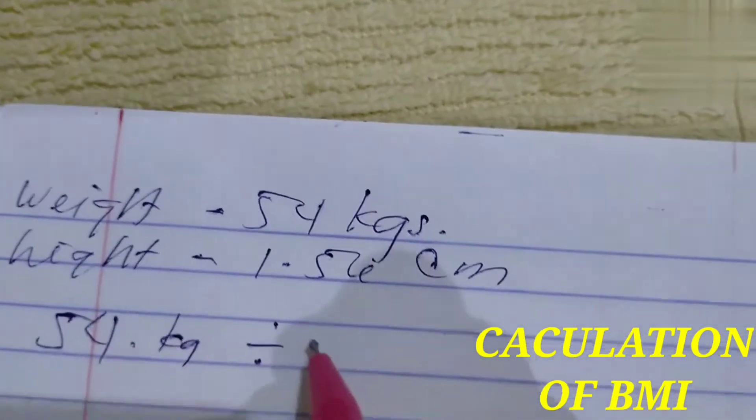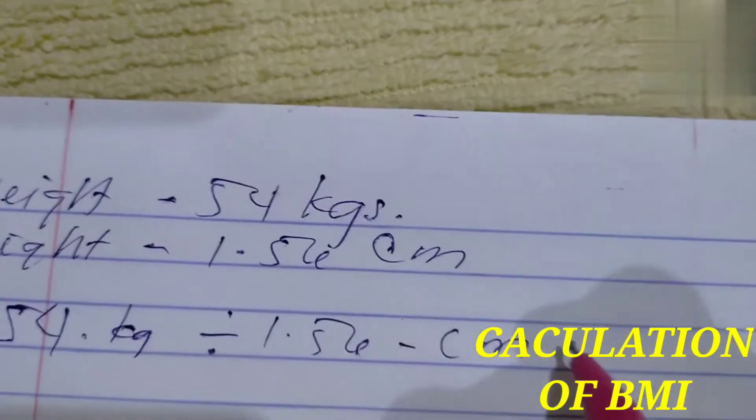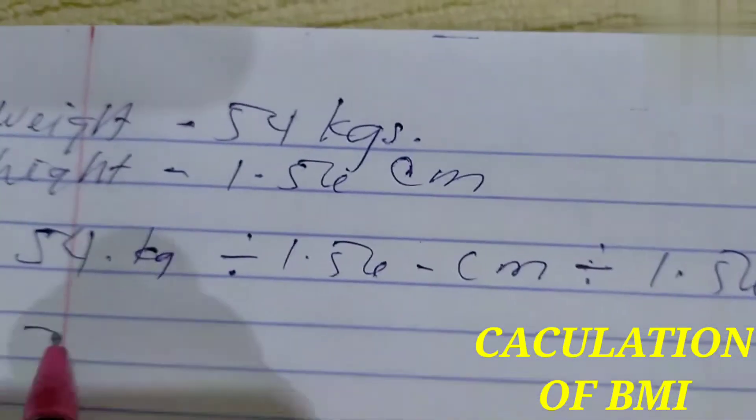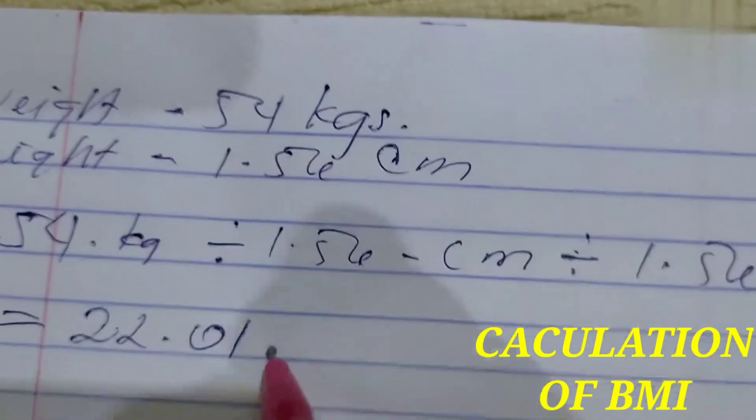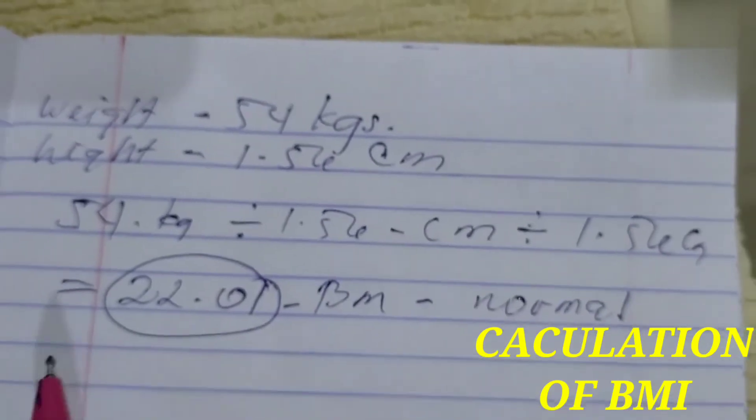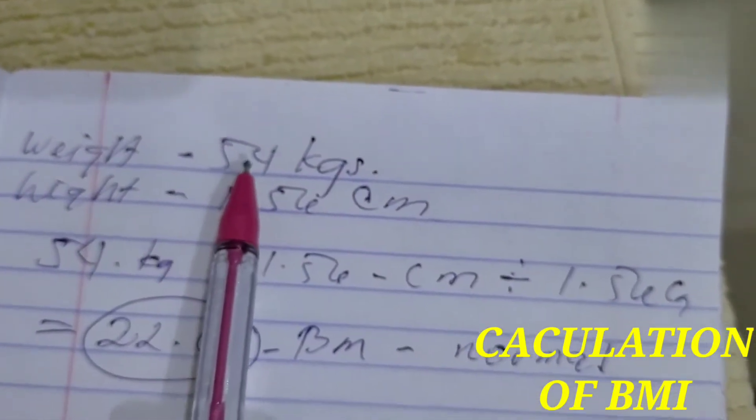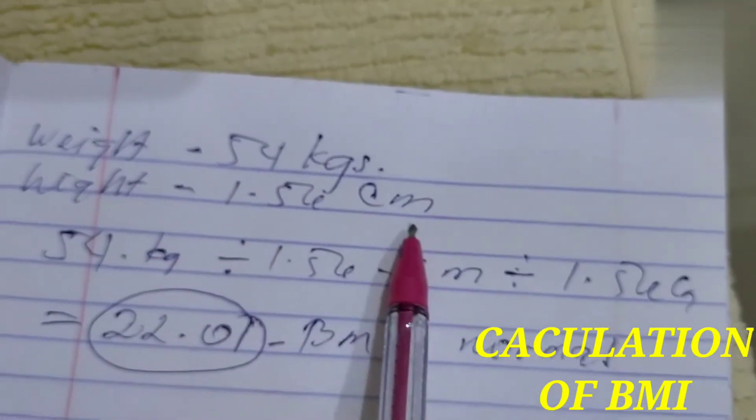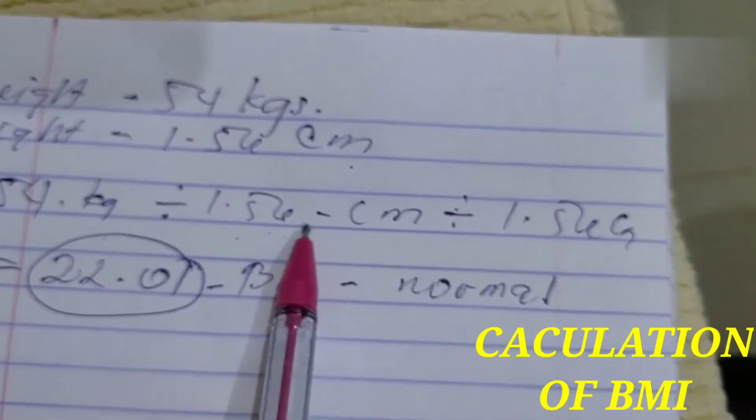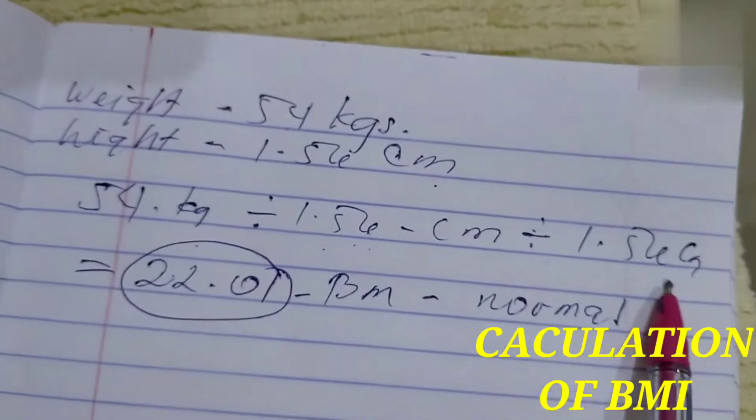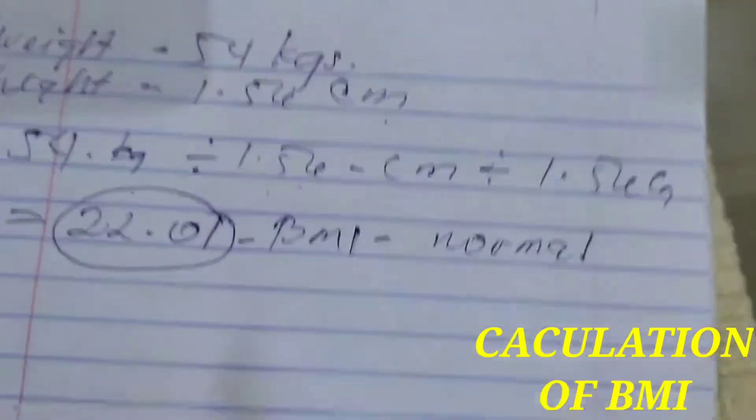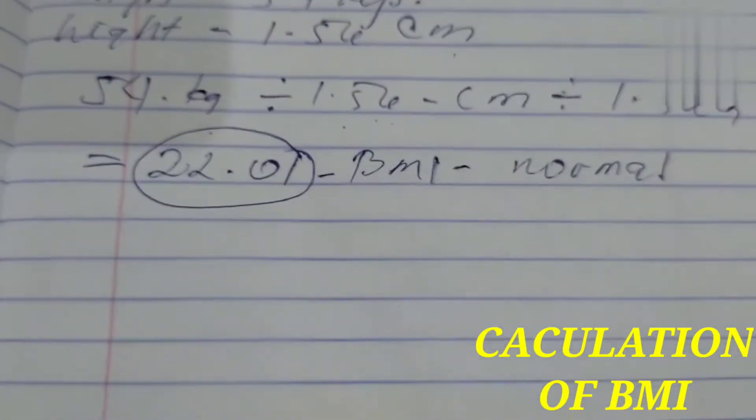So this is the BMI which is normal. This is how you calculate your BMI. For example, the person's kilogram is 54 and the height is 1.56 centimeter. So you have to start with the kilogram, 54 kg, divided by 1.56 cm and another 1.56 cm. Divide it three times all together and you can get the result of 22.1, which is the BMI. Do you need another example?